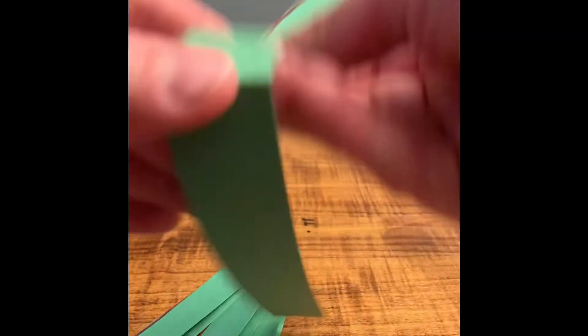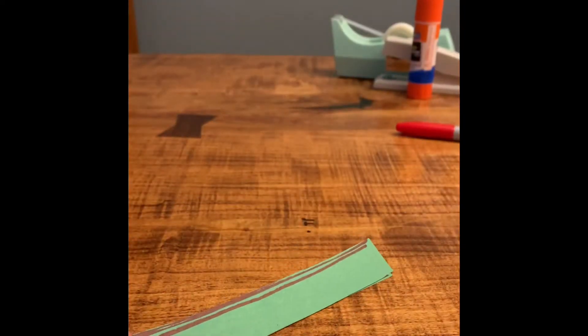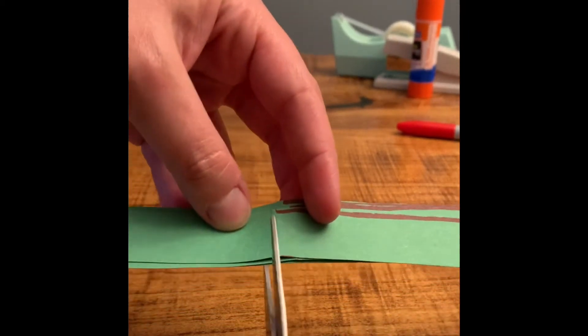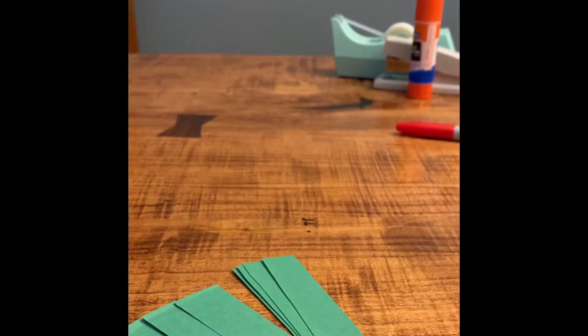Once you have your strips of paper cut out, you can stack them up and cut along the center so that you have more pieces that are a shorter length. I like to have about eight small pieces of paper to create my paper chain.